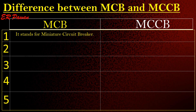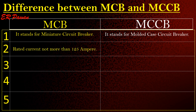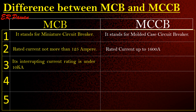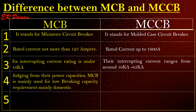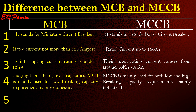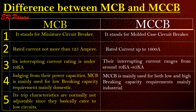Comparing MCB and MCCB: MCB stands for Miniature Circuit Breaker with a rated current of not more than 125A, while MCCB stands for Molded Case Circuit Breaker with a rated current up to 1600A. MCB's interrupting current rating is under 10 kilo-amperes, whereas MCCB ranges from around 10 to 85 kilo-amperes. MCB is mainly used for low breaking capacity requirements in domestic settings; MCCB covers both low and high breaking capacity in industrial use. MCB trip characteristics are normally not adjustable, while MCCB trip current may be fixed or adjustable for overload and magnetic settings.